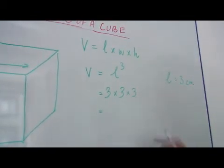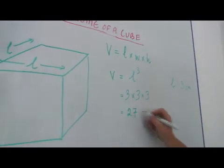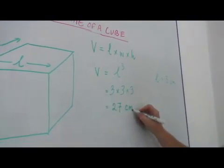Be careful with this. 3 3's are 9. 3 9's are 27. So 27 centimeters cubed.